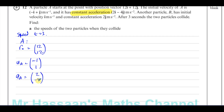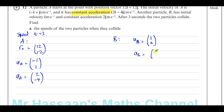Now for particle B: its initial velocity U_B equals i meters per second, which is (1, 0) as a column vector. The acceleration of particle B is 2j, which is 0i plus 2j meters per second squared, written as (0, 2). That's all we know about B.